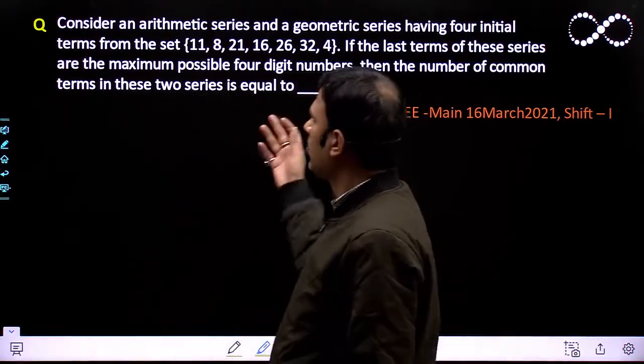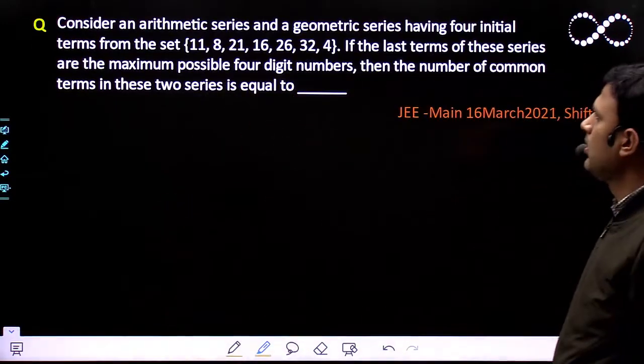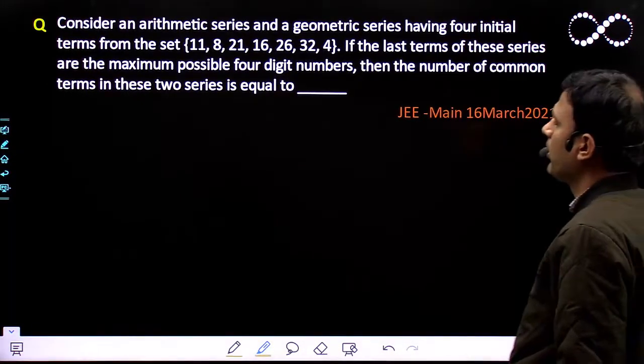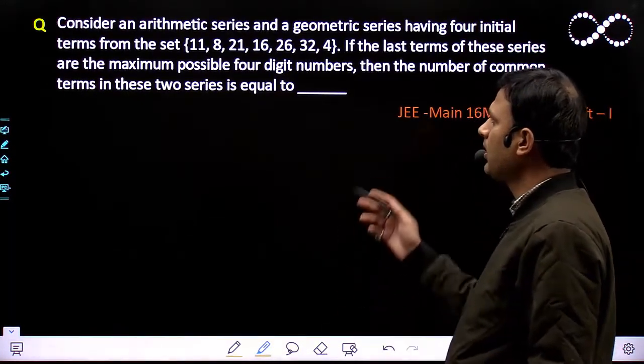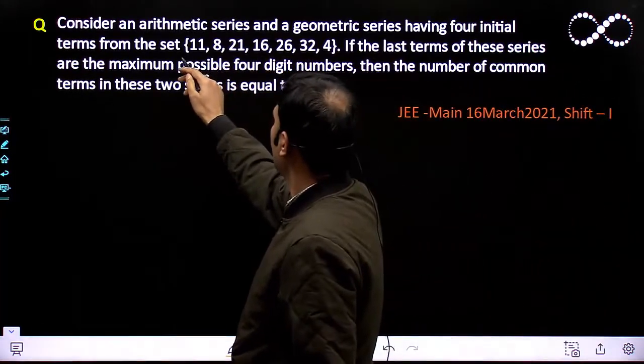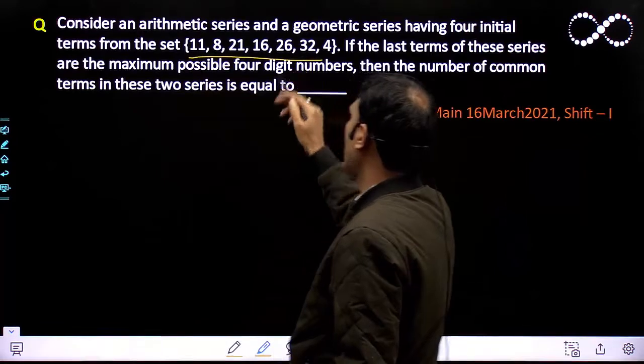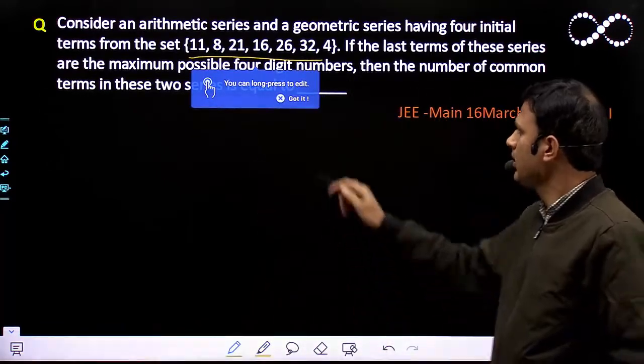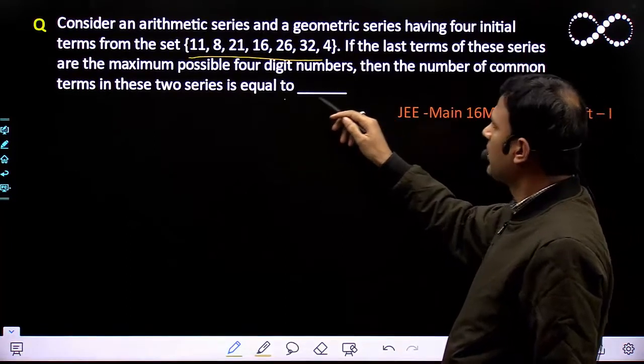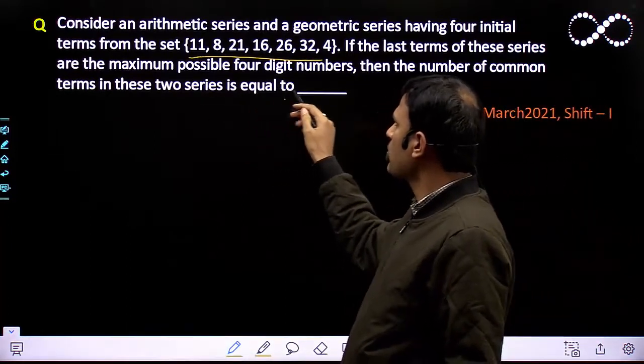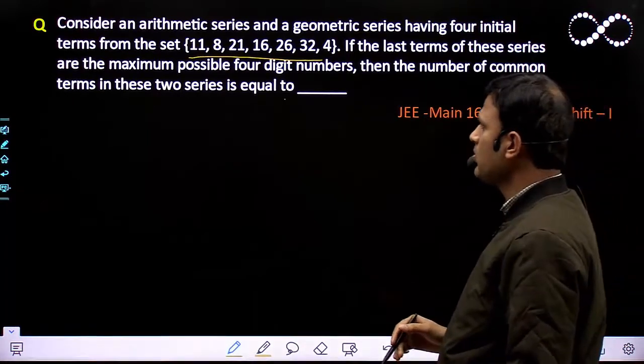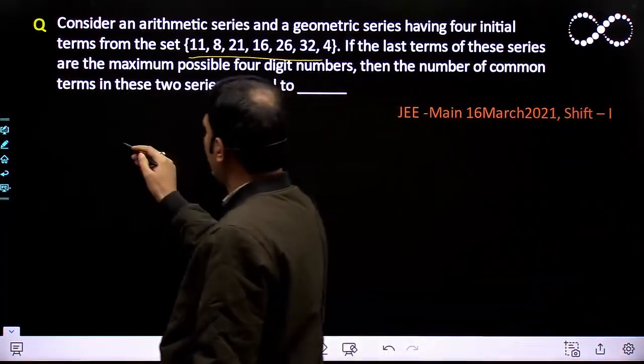Hello students. Consider an arithmetic series and a geometric series having four initial terms from the set {11, 8, 21, 16, 26, 32, 4}. If the last terms of these series are the maximum possible four-digit numbers, then the number of common terms in these two series is equal to... So let's first make the AP series.